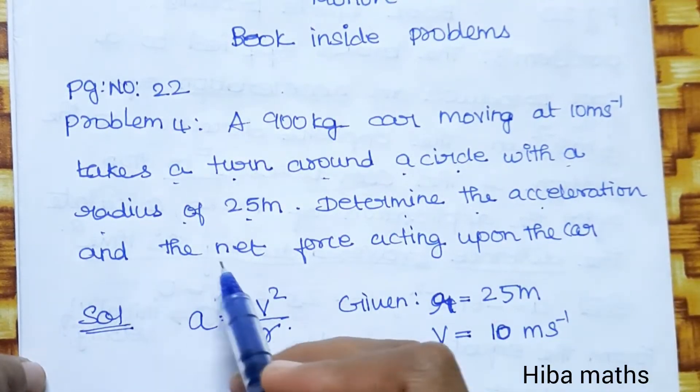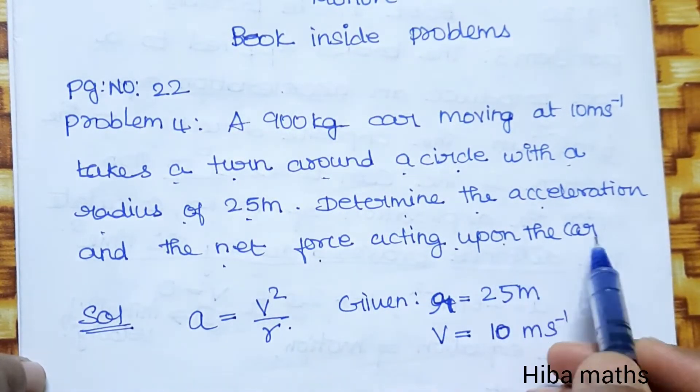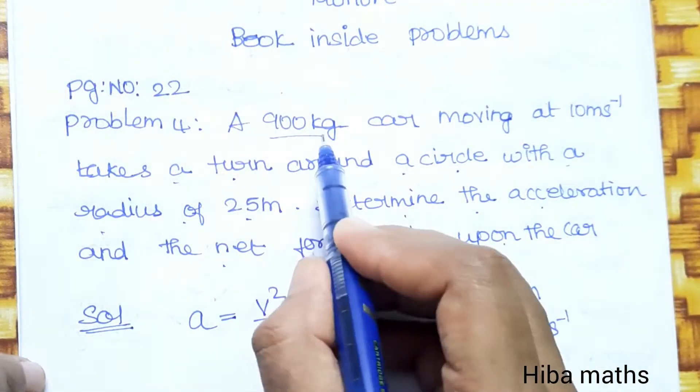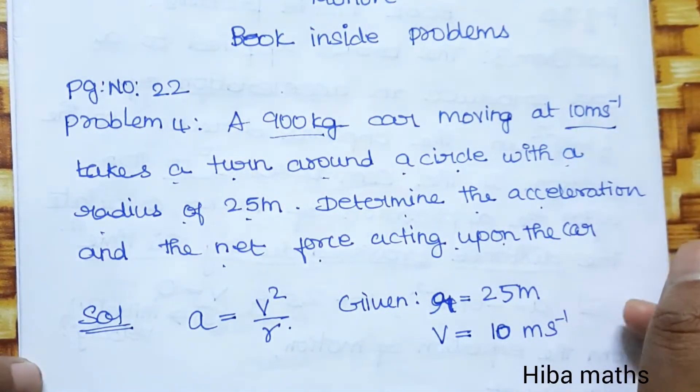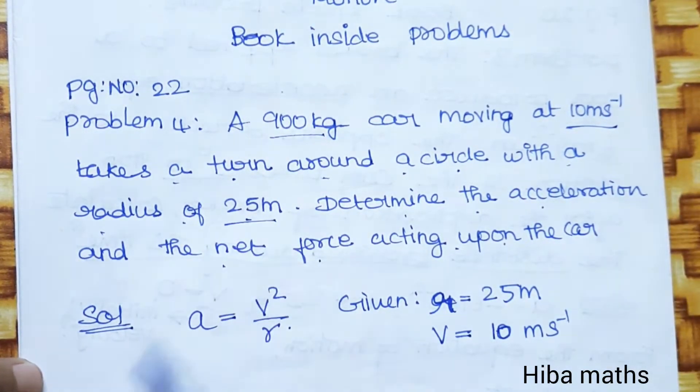So one car is here with its weight. The car moves around the circle, so you have a radius.